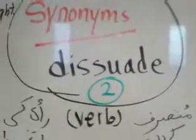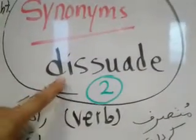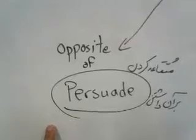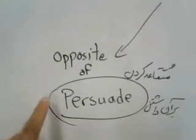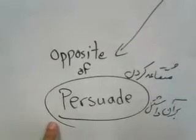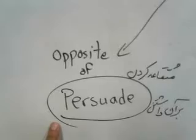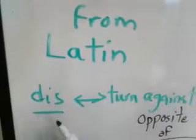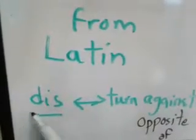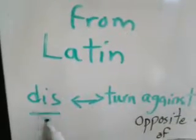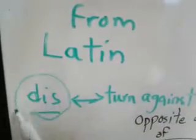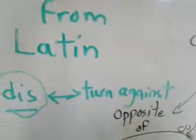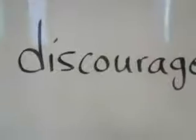We are looking at the synonyms for 'dissuade.' Dissuade is the opposite of persuade. The word is Latin, and in Latin this prefix means to turn against or turn around.